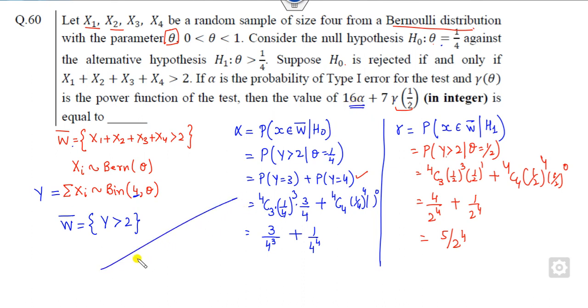So what is the answer? 16α + 7γ. So 16 times α is 16(3/4³ + 1/4⁴) + 7(5/16) = 16(3/64 + 1/256) + 35/16. You can see it will be 3/4 + 1/16 + 35/16.